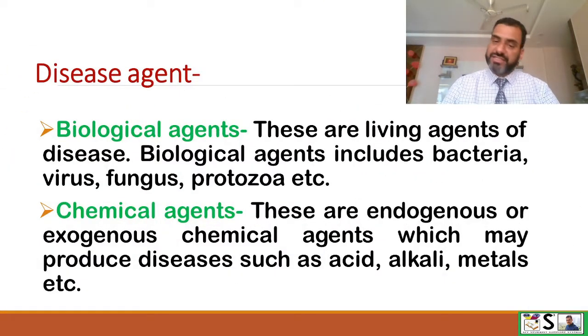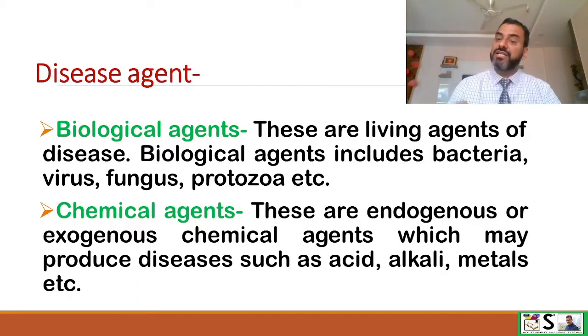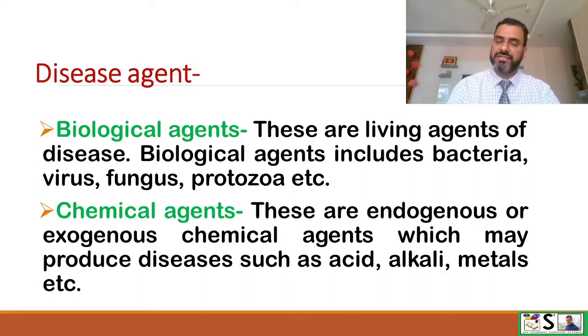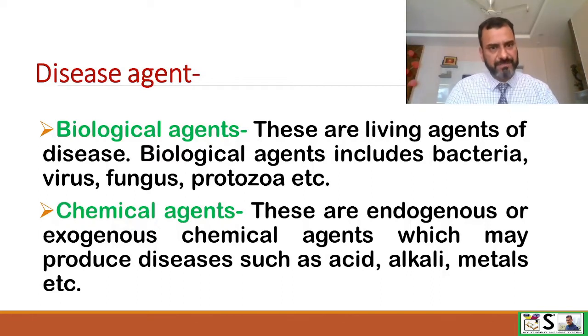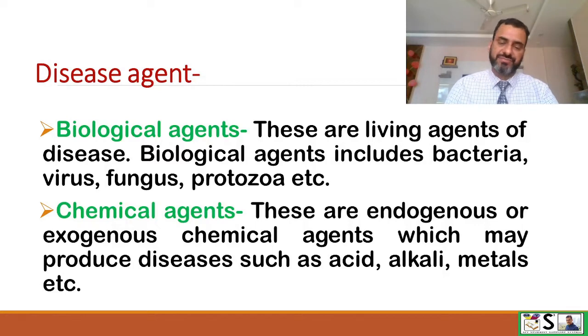Biological agents: These are living agents of disease and include bacteria, viruses, fungi, protozoa, etc. Chemical agents: These are endogenous or exogenous chemical agents which may produce diseases, and these include acids, alkali, metals, etc.